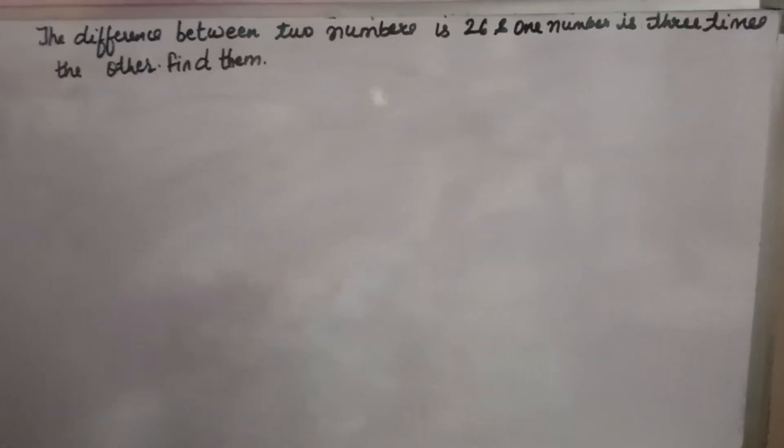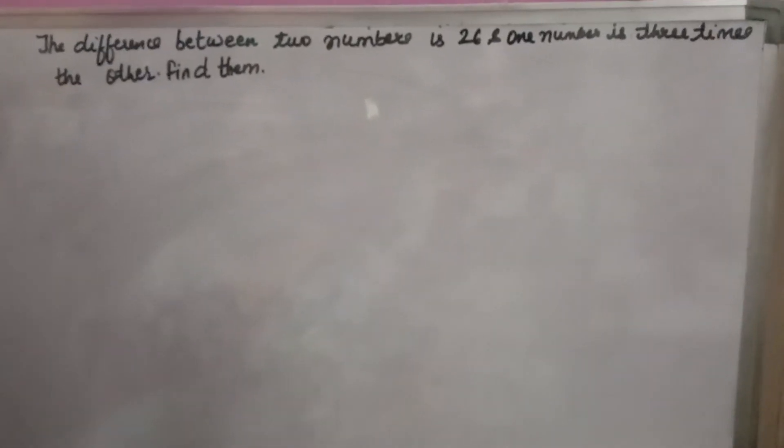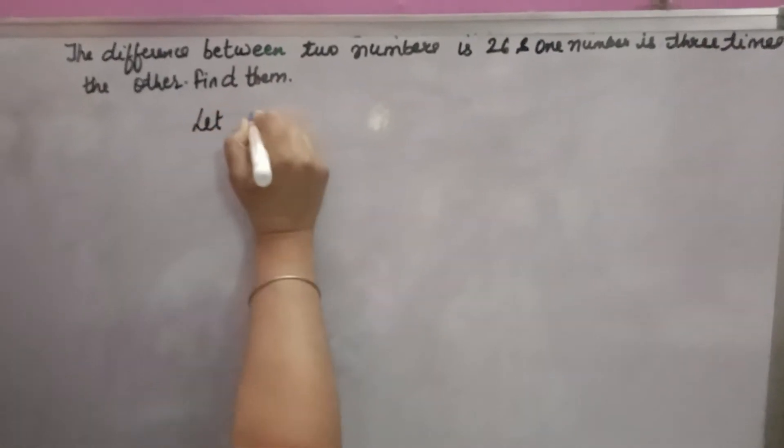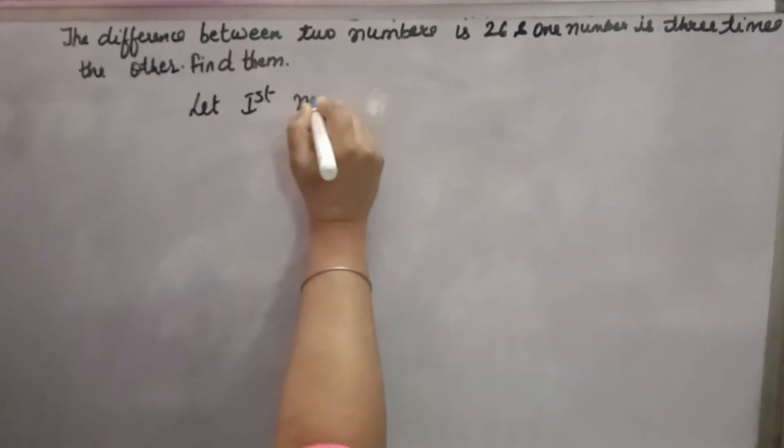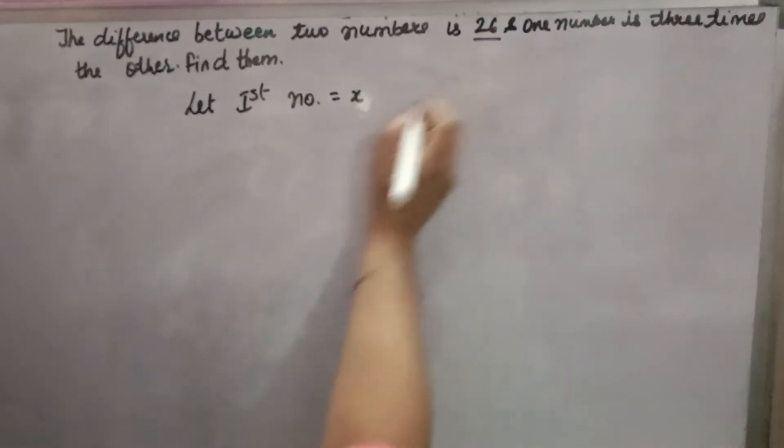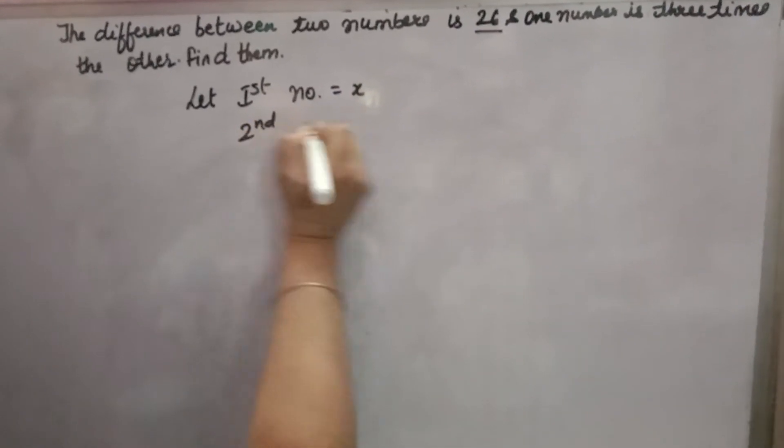Students, welcome back to your favorite channel Math Helpers. Here's one more important question: The difference between two numbers is 26. So let first number is equal to x. The difference is given as 26. Whatever the difference given, the second number you have to take as first number plus that difference, means x plus 26.